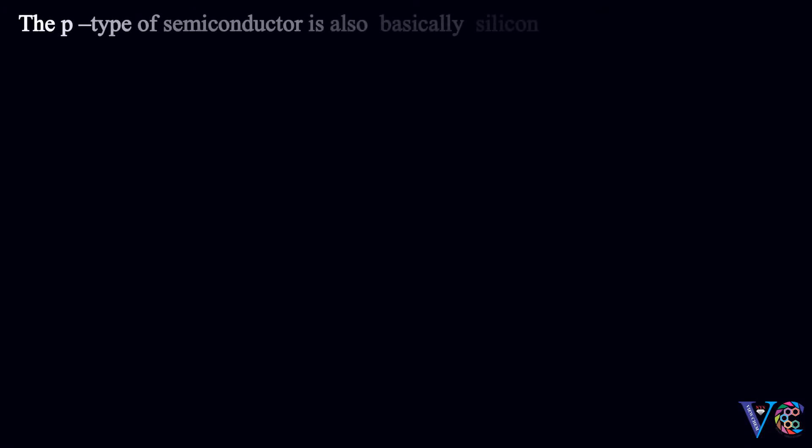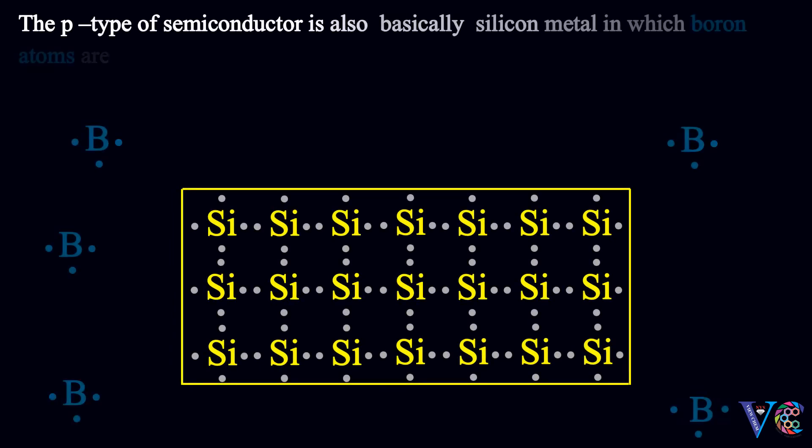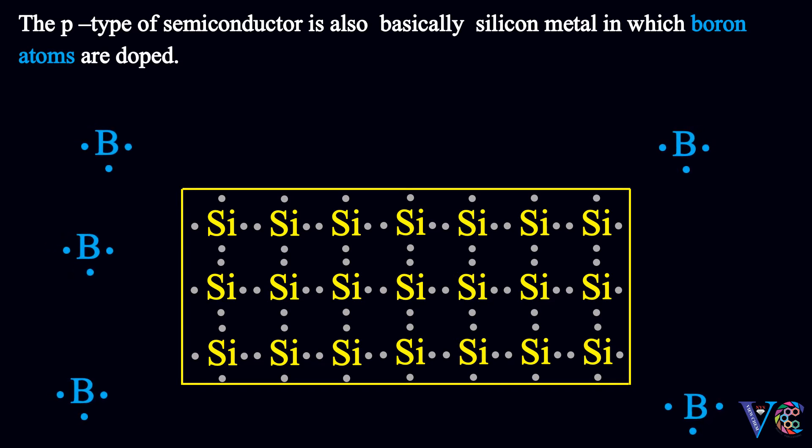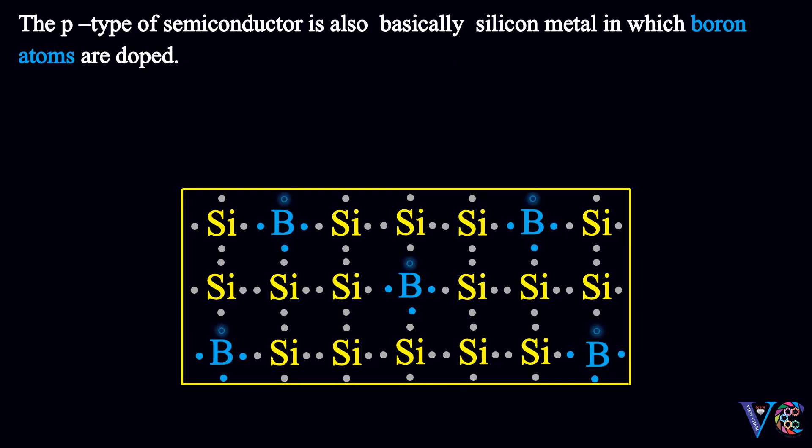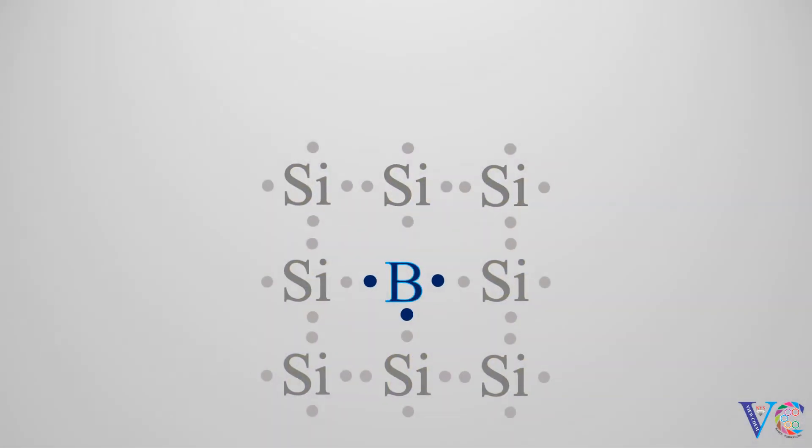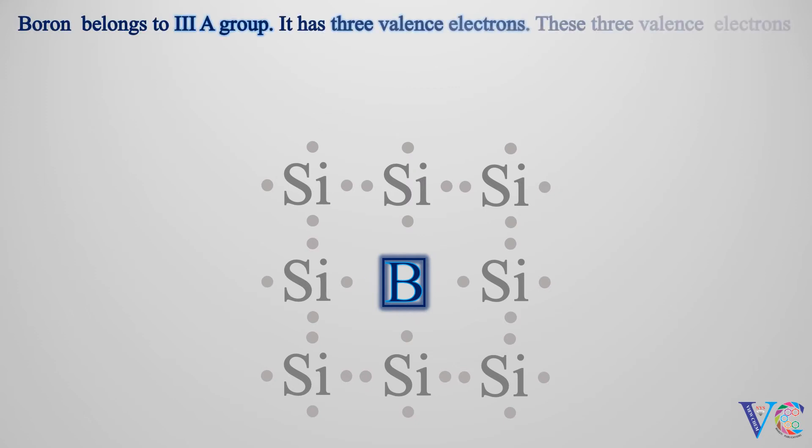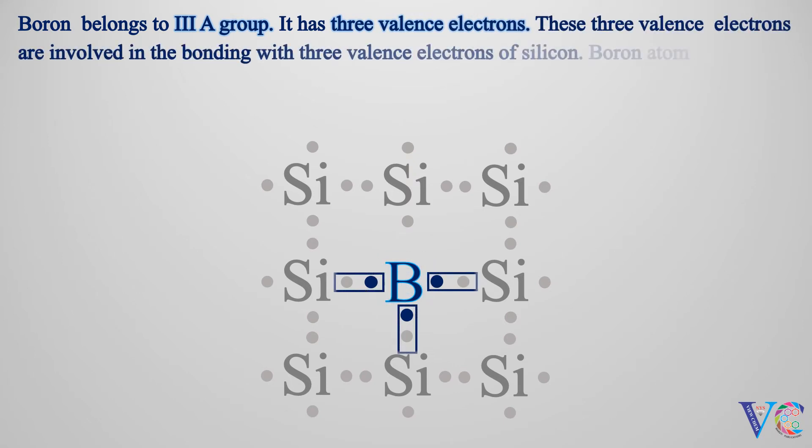The P type of semiconductor is also basically silicon metal, in which boron atoms are doped. Boron belongs to three A group. It has three valence electrons. These three valence electrons are involved in the bonding with three valence electrons of silicon. Boron atom has one valence electron less than silicon atom. As a result, a hole is formed.